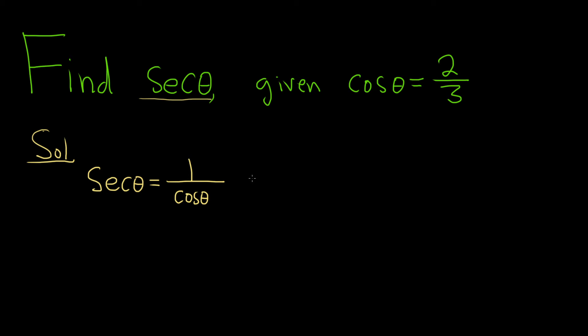And now you can just plug in 2 thirds into this formula. So it would be 1 over 2 over 3. So we're taking 1 and we're dividing it by 2 thirds, so when you divide, you multiply by the reciprocal.